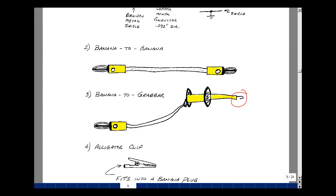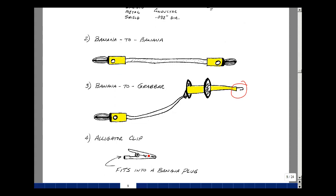Now you can also make your own banana to grabber by taking an alligator clip and putting this end onto this one, and then you can probe into your circuit. We'll mostly be using the banana to grabbers in connecting some of our instruments to our circuit, and we'll be using these types of wires to make other types of connections.